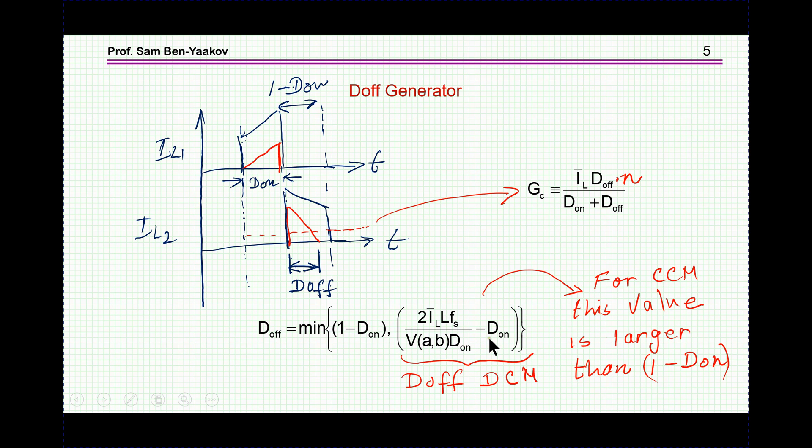Then, there is another correction that has to be made for the output. Because we are sampling the current at a shorter period, not 1 minus DON, there is a need for the output source, output current source, you have to divide it by DON plus DOFF. Of course, in CCM, this is one, so it's exactly what we've seen before, inductive current, DOFF times N. But in DCM, you have to add this to correct for what I've just explained, and again, if you like to get a more detailed explanation of what's going on here, you're welcome to look at the reference that I'm citing in the page of this YouTube video.